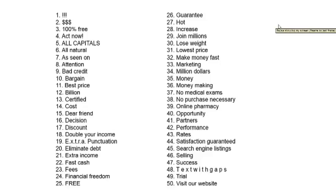One phrase that's not on the list but really pops out: whenever you use anything over 100% in your emails — like 'making 120% back of your money' — that phrase alone can be 2.9 to 3.1 points on the spam score. Spam checkers don't like when you do anything over 100%. So that's something to take into serious consideration.